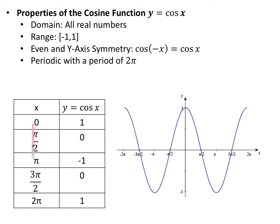Cosine at theta equals 0 is 1, at pi over 2 is 0, at pi is negative 1, at 3 pi over 2 is 0, and at 2 pi is 1. So it starts up at its high point, goes decreasing, and then comes back up. This repeats on forever in either direction.